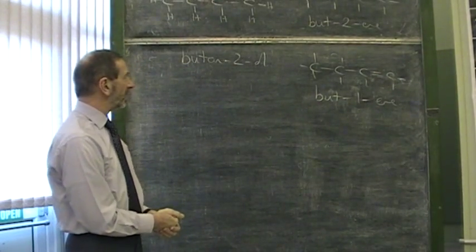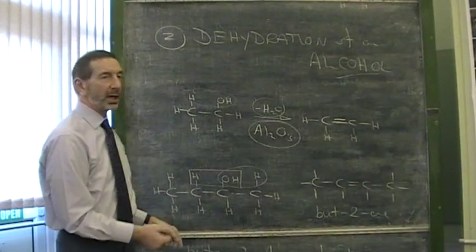Alkenes can be made in two ways. Cracking, or by dehydrating an alcohol.